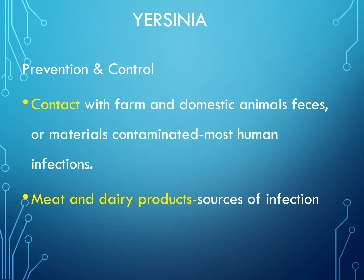To prevent and control Yersinia infection, contact with farm and domestic animal feces or materials contaminated with feces is the most common source. We prevent infection by using protective gear, screening infected animals, and noting that meat and dairy products can also be a source of infection.